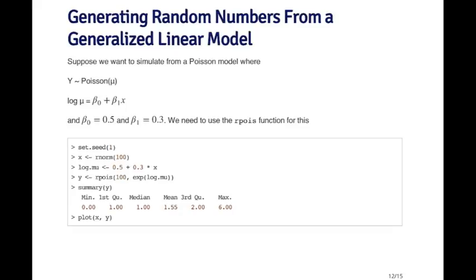So we need to use the rpois function for this. And so we first set the seed as always. And we generate our predictor variable x, which is going to have a standard normal distribution. Then we're going to generate our linear predictor log of mu, which is just adding the slope and the intercept and the slope coefficient times x. So that's the log of our linear predictor, but in order to get the mean for our Poisson random variable, we need to exponentiate that. So we simulate 100 of these Poisson random variables using the rpois function and we give it the exponential of our log mean.